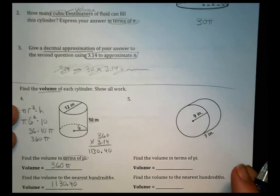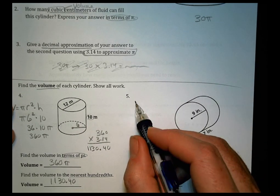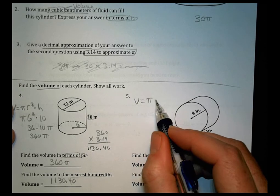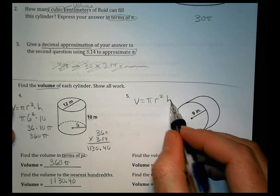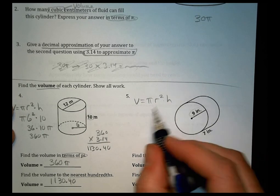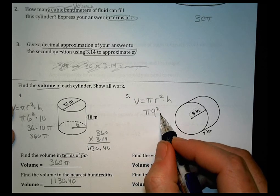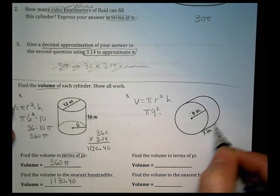Number 5, same idea for number 5. We have the volume equals pi times radius squared times the height. We have a radius. So pi times 9 squared times the height. This is the height here.